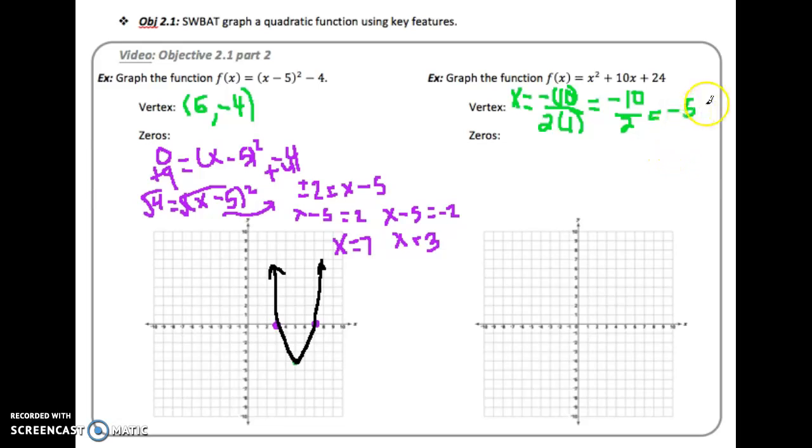And now in order to find the y-coordinate of my vertex I'm just going to plug this in for x. So I'm going to plug it in for the two x values that are here and when I do that I'm going to get -1. You're welcome to spend the time to do that but my vertex is (-5, -1) so I go over to -5 I go down to -1. Alright so I plotted my vertex and now I want to find my zeros.